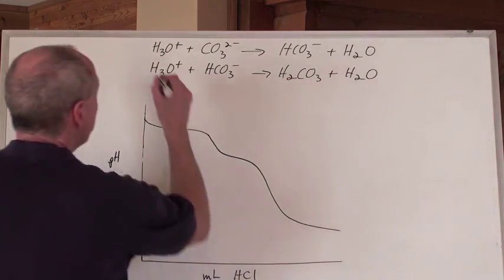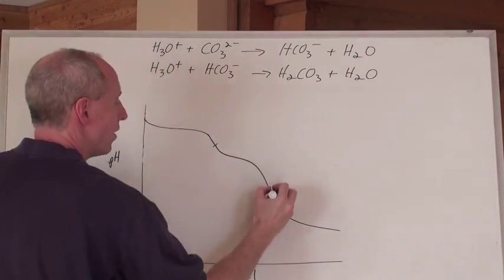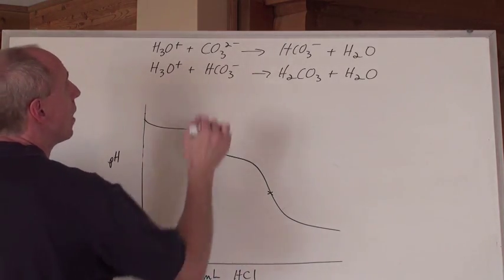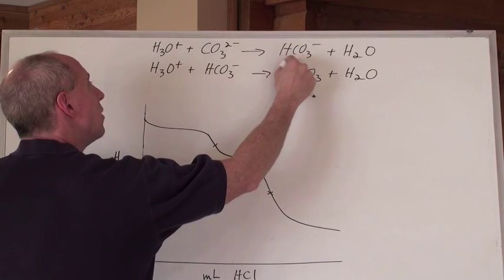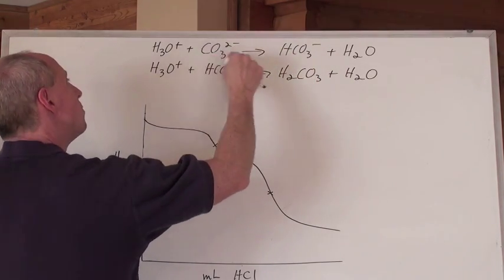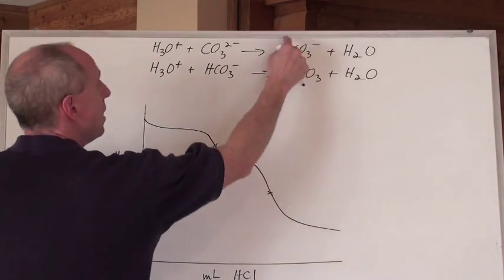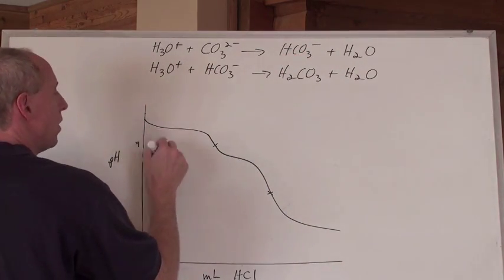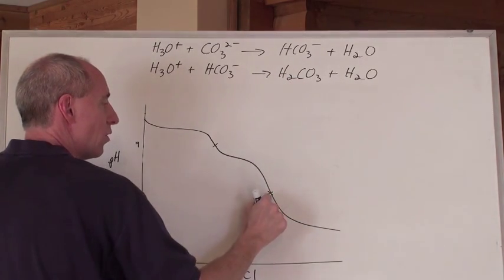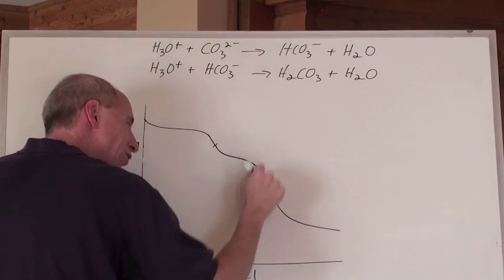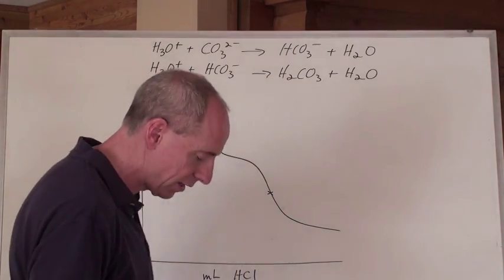The equivalence point for the first titration would be here, and the equivalence point for the second one will be here. Bicarbonate is a base in solution — this first equivalence point is about pH 11.65, which we calculated before. The second is around pH 9. This forms a weak acid in the second equation, so that equivalence point is going to be around pH 3 or 4.